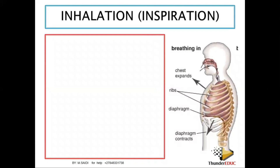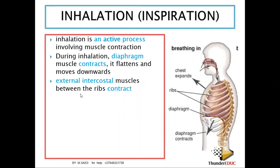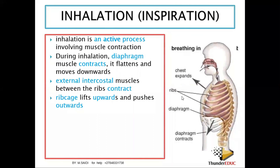Inhalation is an active process — it requires energy, so there is contraction of muscles. The diaphragm contracts and becomes flat, moving downwards. The intercostal muscles between the ribs also contract, and the rib cage lifts upwards and outwards, increasing the volume inside the thorax. The increase in volume reduces the pressure inside.